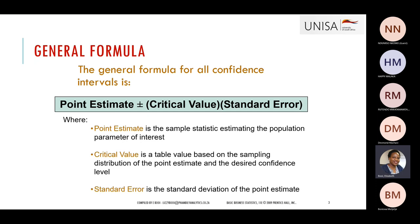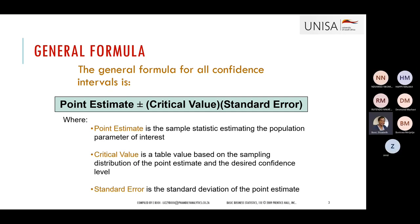In terms of the confidence interval, the formula always uses the point estimate — the sample statistics. It's either going to be x-bar for the mean or p-hat for the proportion, plus or minus your margin of error. The margin of error is made up of your critical value times your standard error. The critical value depends on whether the population standard deviation is known — then you use the Z test.